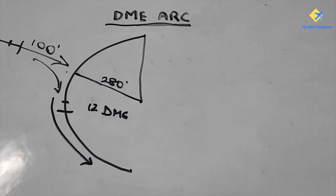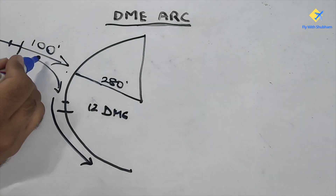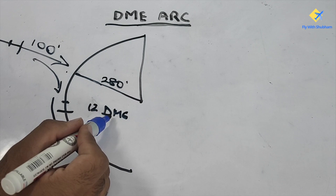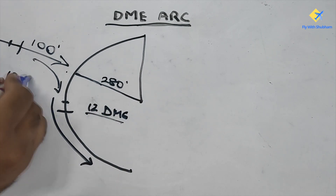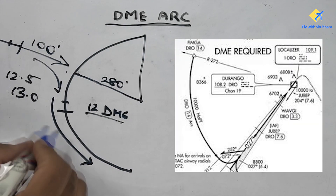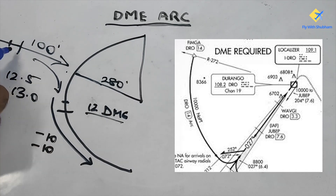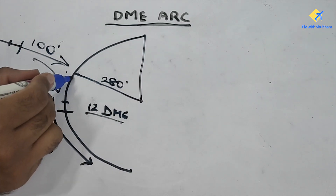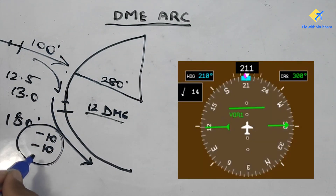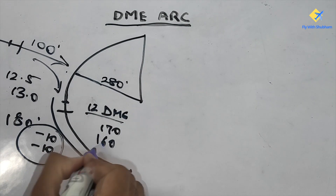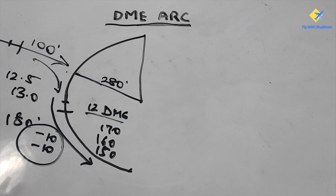This is another example where you are coming inbound on a heading of 100 — which corresponds to radial 280 — and you turn right to intercept a 12 DME arc. Depending on aircraft speed you will turn at 12.5 or 13 DME and establish yourself on the left DME arc. In a left DME arc the heading and course will always decrease by 10 each, while the initial turn being toward the right means adding 80 degrees. So from heading 100, the new heading is 180, and you follow minus 10 / minus 10 steps: 170, 160, 150 and so on, until you intercept your lead radial and turn to the final approach course.